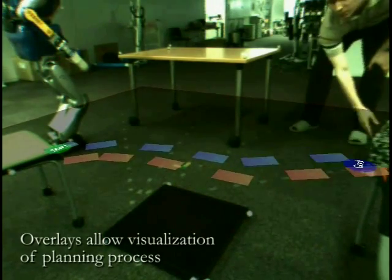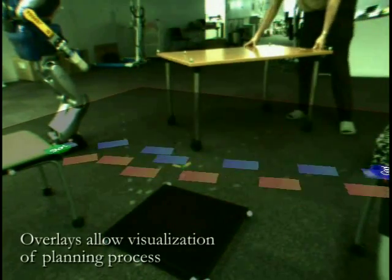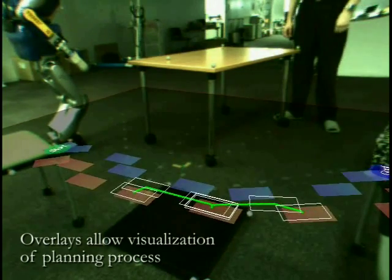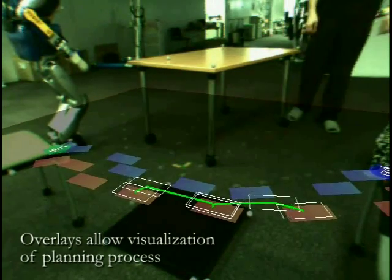Here you can see the footstep sequence planned from the robot to the box. This allows for intuitive evaluation of sensing accuracy and system integration testing.